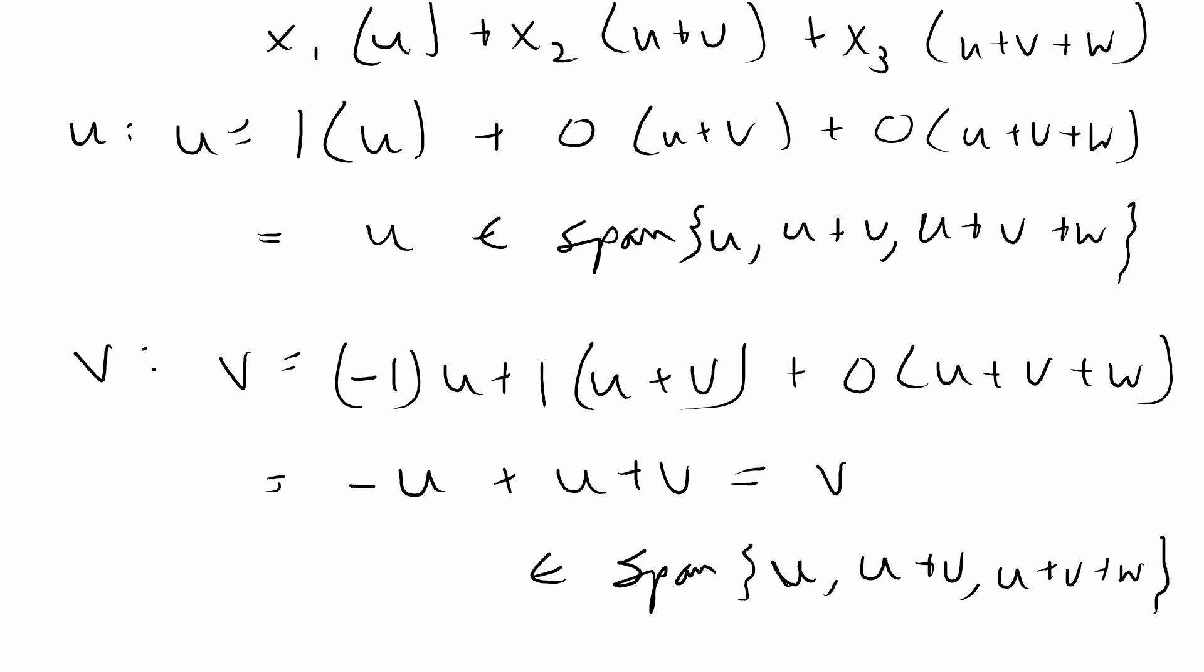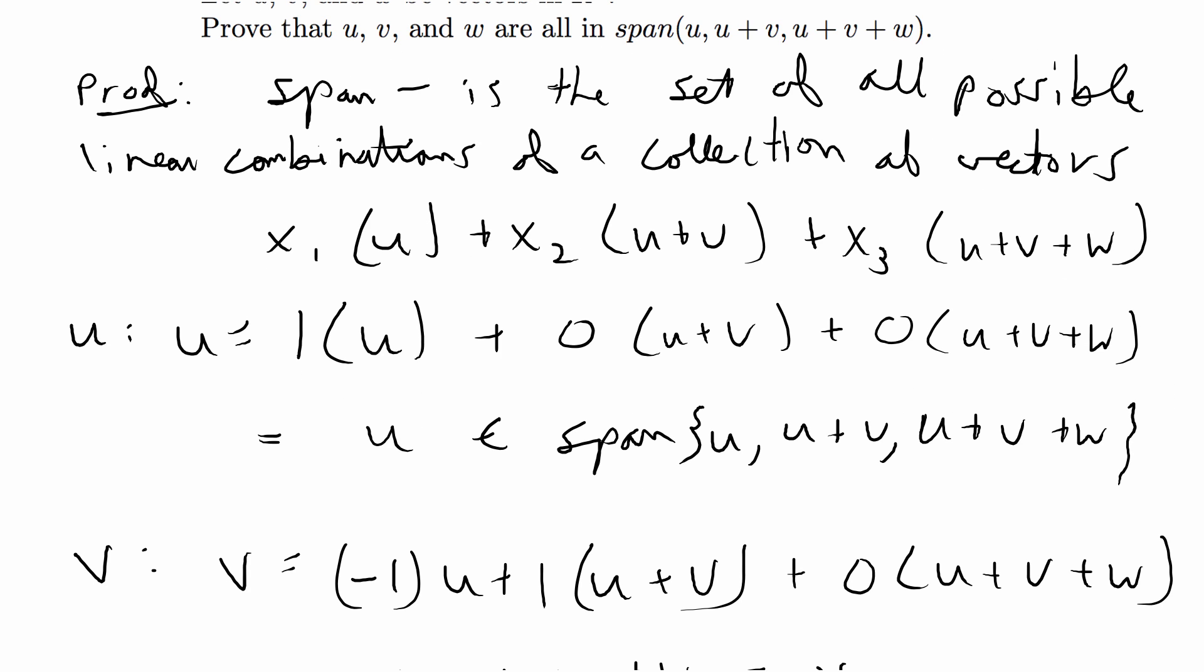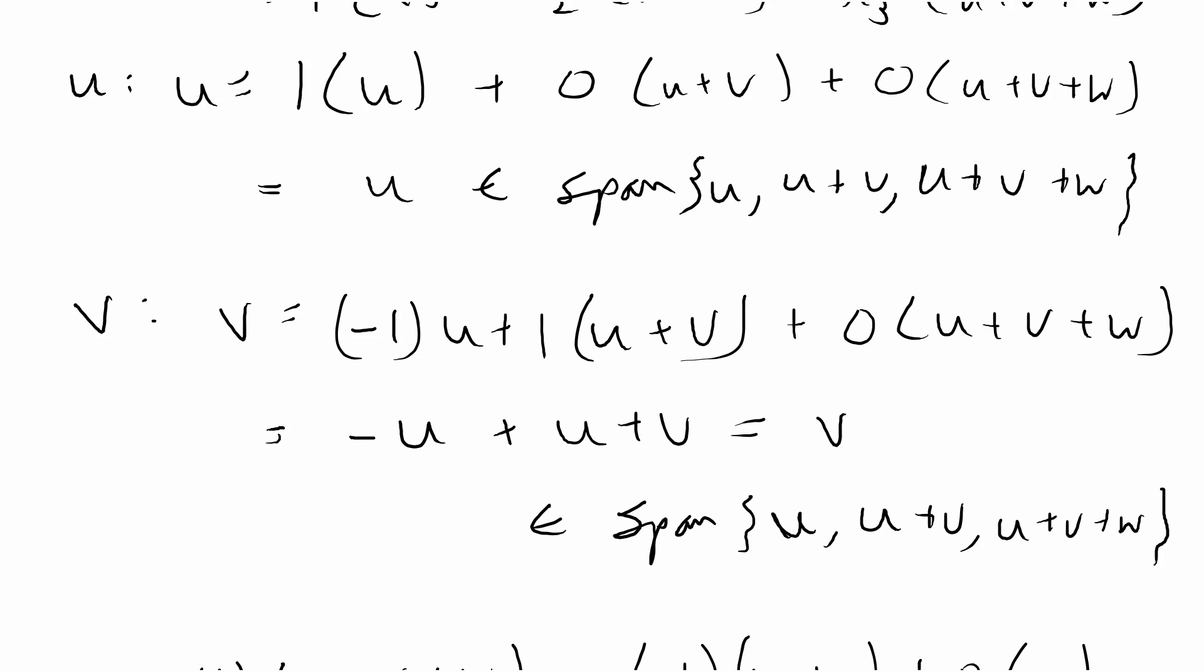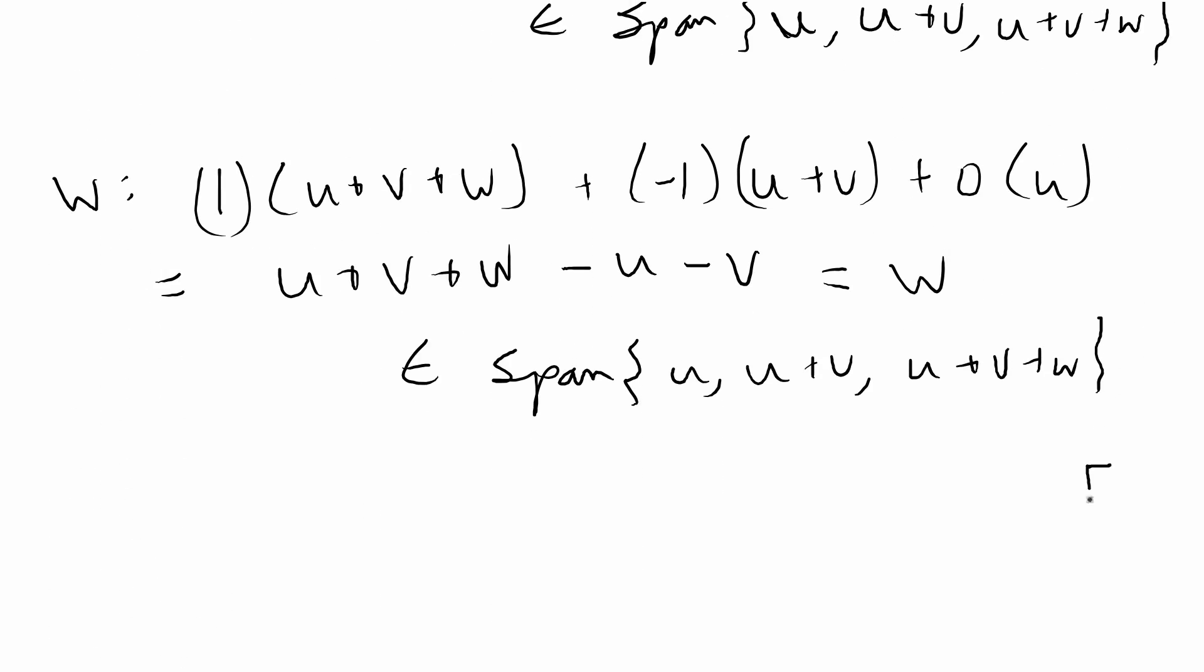And so we have found that we can get linear combinations using u, u plus v, and u plus v plus w. We can get the vector u, the vector v, and the vector w by themselves, so these vectors are in the span, and we're done with this proof.